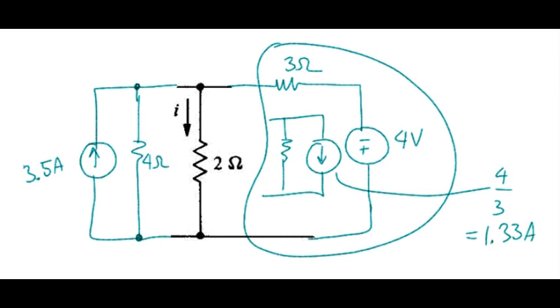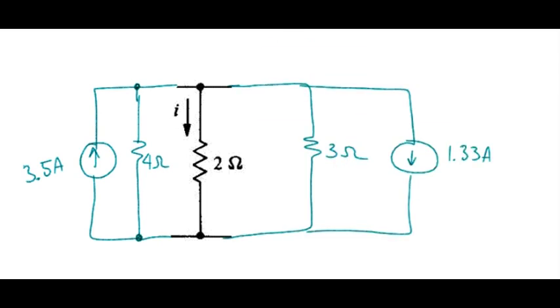Go ahead and replace that. Now again, taking care that we don't somehow remove the device that carries our quantity of interest, the current, we've got 4 in parallel with 3, which combines to 1.71 ohms.